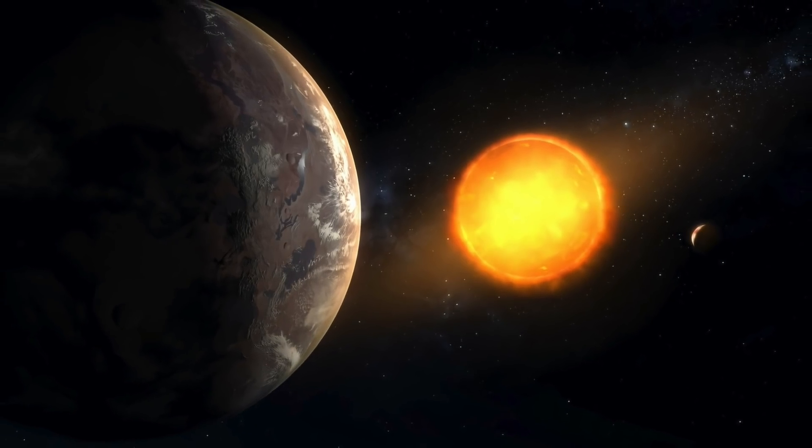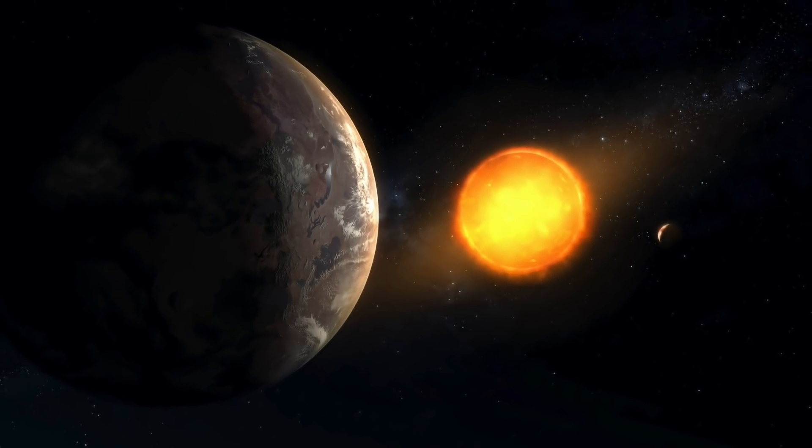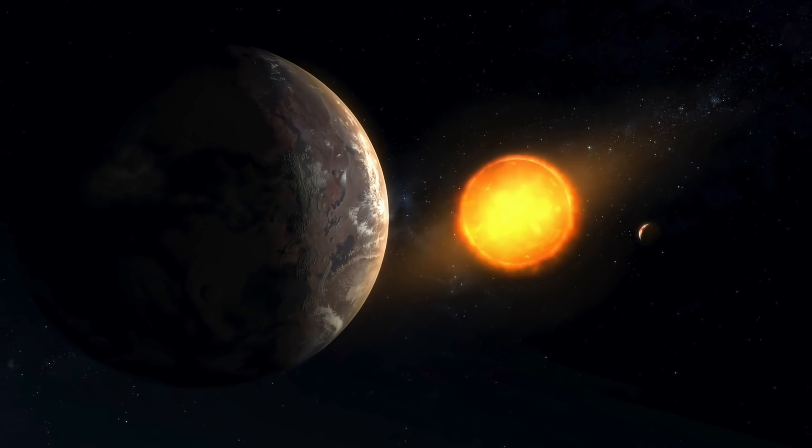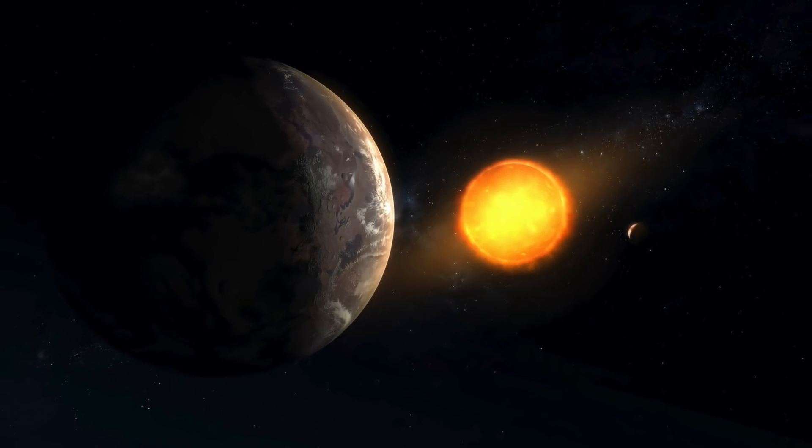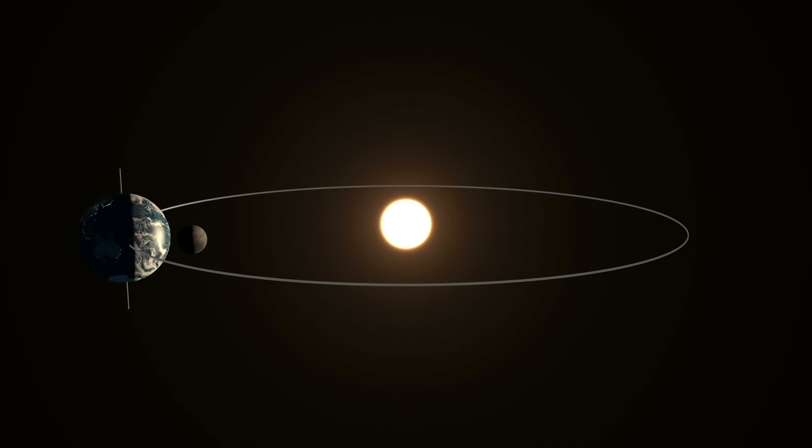Scientists could find out that the exoplanet orbits its star in a rather narrow orbit. According to this, Kepler 1649c needs just 19.5 days for a complete orbit around its red dwarf. The Earth, in turn, is known to need a whole year for this undertaking.